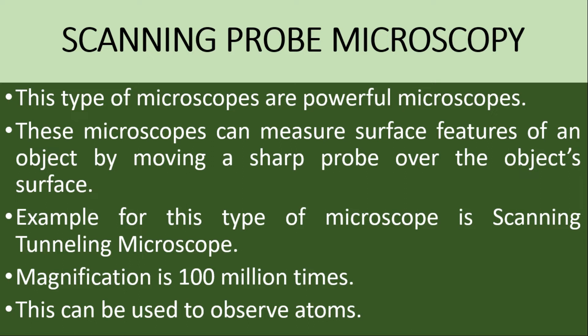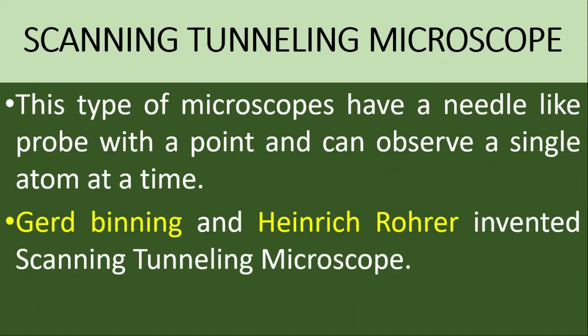An example of this type of microscope is the scanning tunneling microscope. The scanning tunneling microscope has a magnification of 100 million times. This can be used to observe even atoms of small size. This type of microscope has a needle-like probe with a point and can observe a single atom at a time — that is the peculiarity of the scanning tunneling microscope.